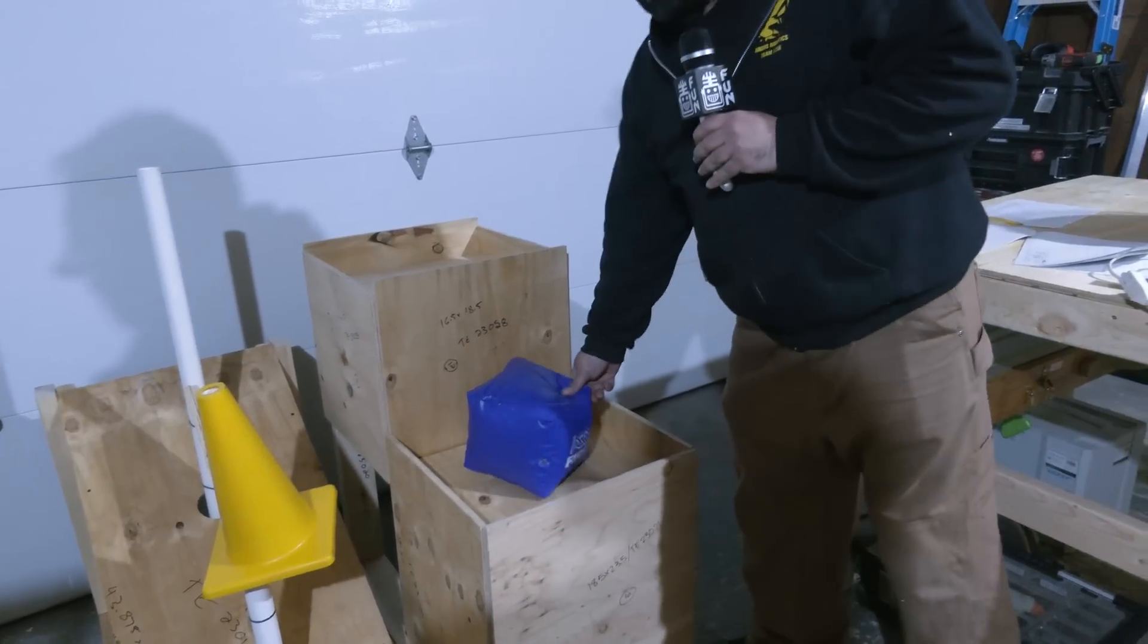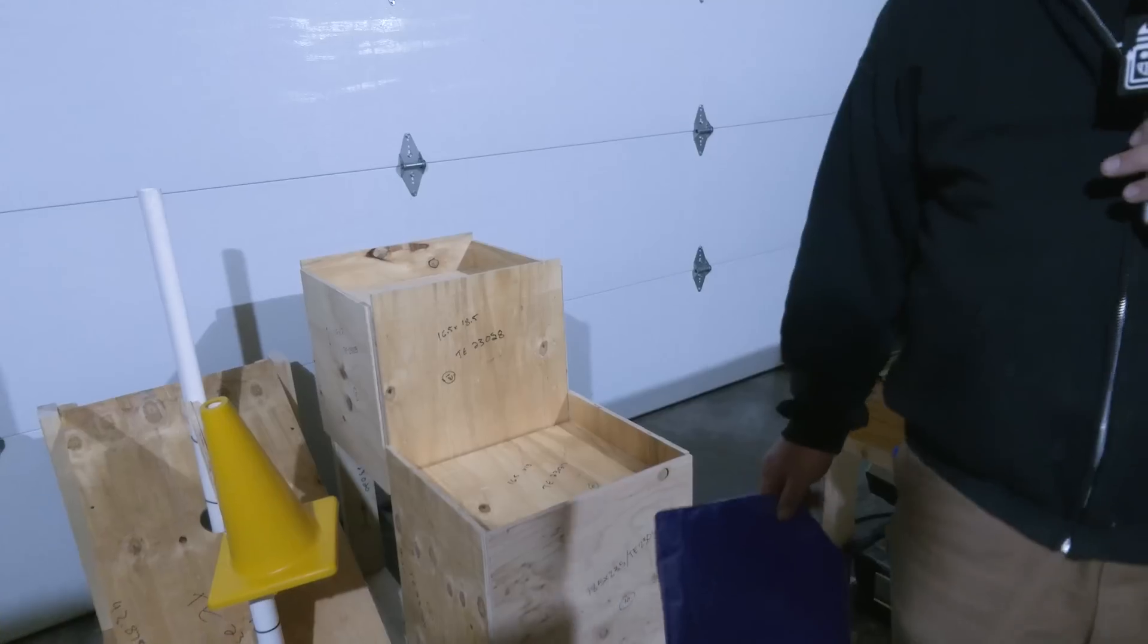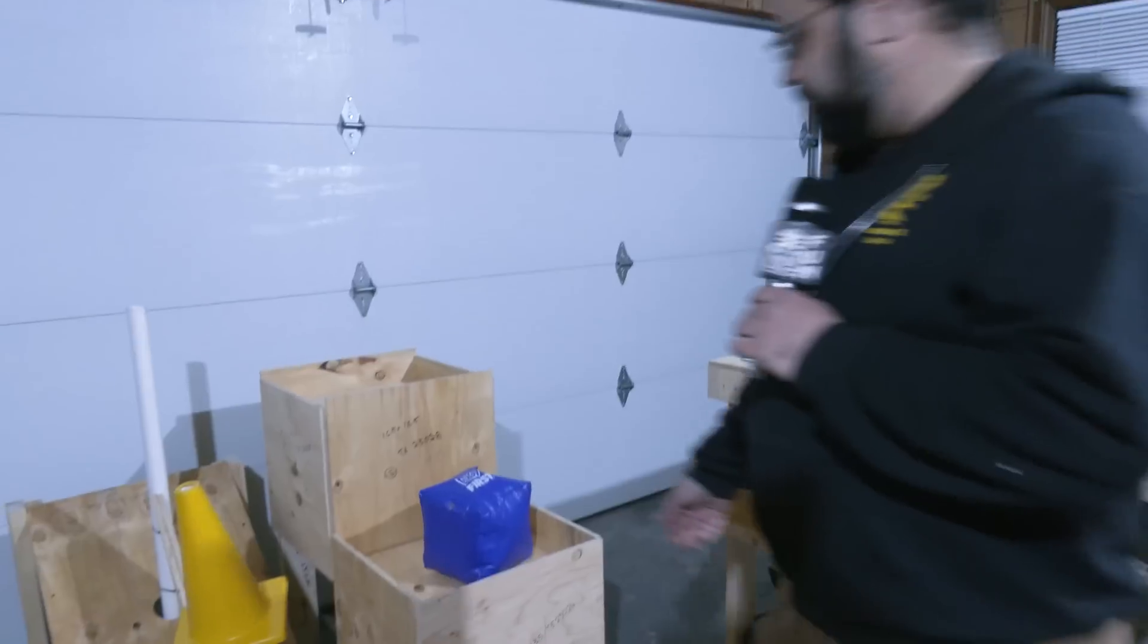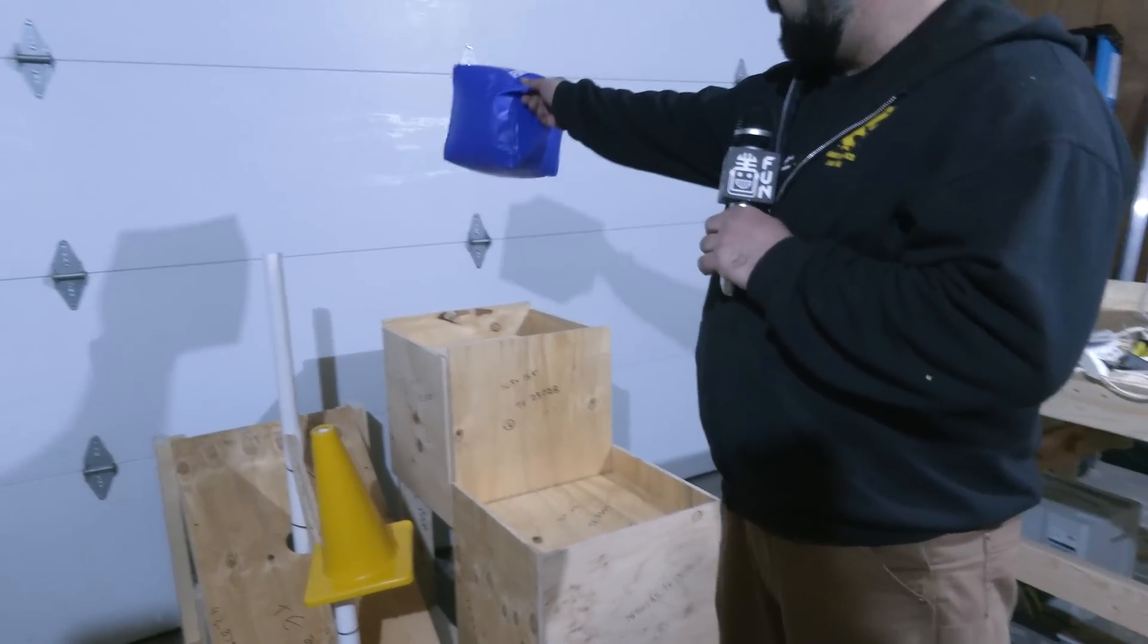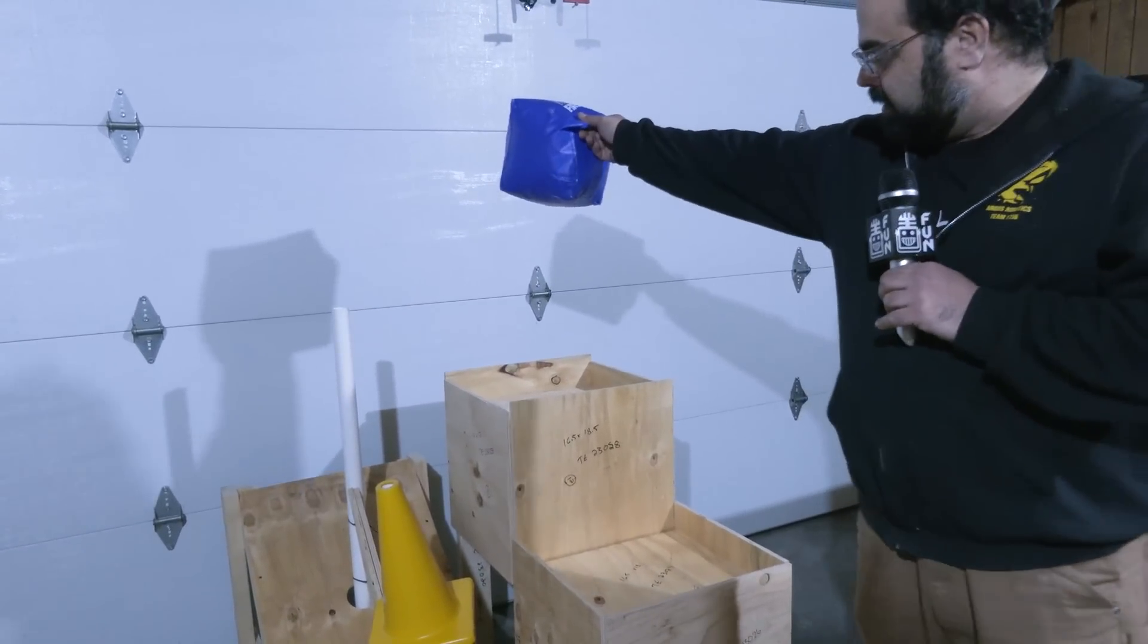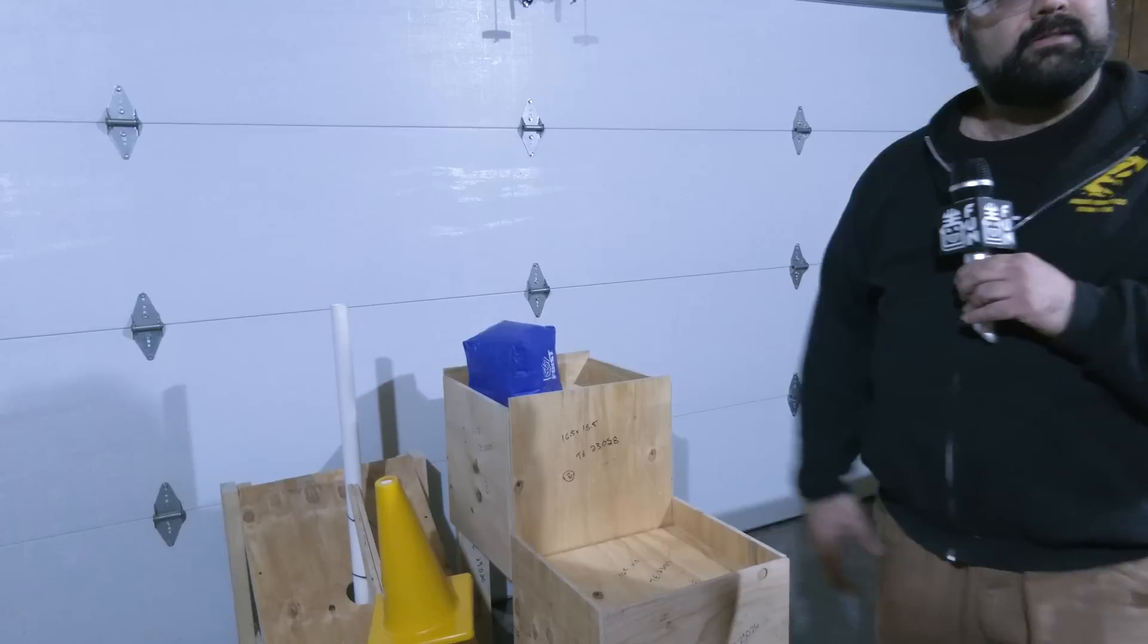This is made out of plywood, which isn't exactly what the field will have, but there's a three inch lip all around. That's pretty forgiving for this. So you got a pretty big drop zone here. Oh wow, scored in the bigger one.